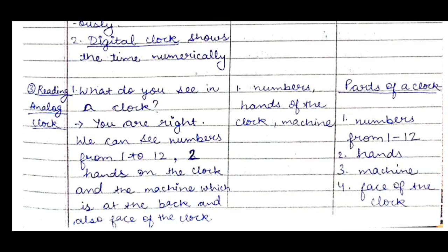The next teaching point is reading the analog clock. The teacher will ask: what do you see in a clock? Students will respond with numbers, hands of the clock, and the machine. The teacher confirms: we can see numbers from one to twelve, two hands, the machine at the back, and the face of the clock. On the board we write the parts of a clock: numbers one to twelve, hands, machine, and face of the clock.